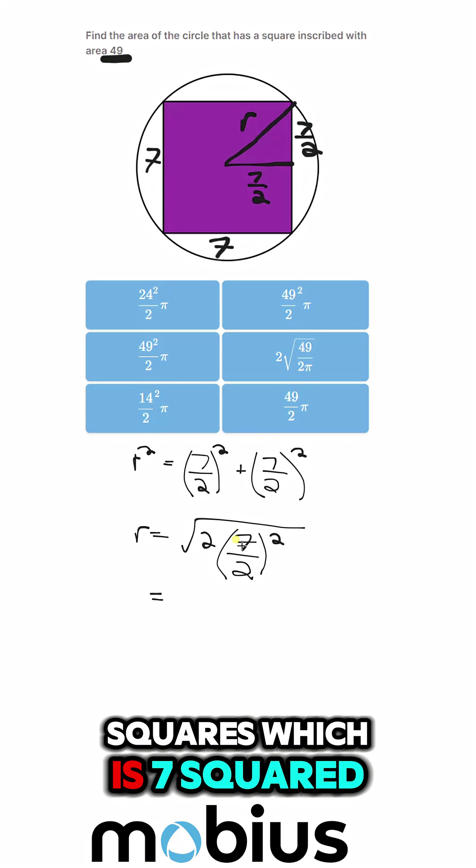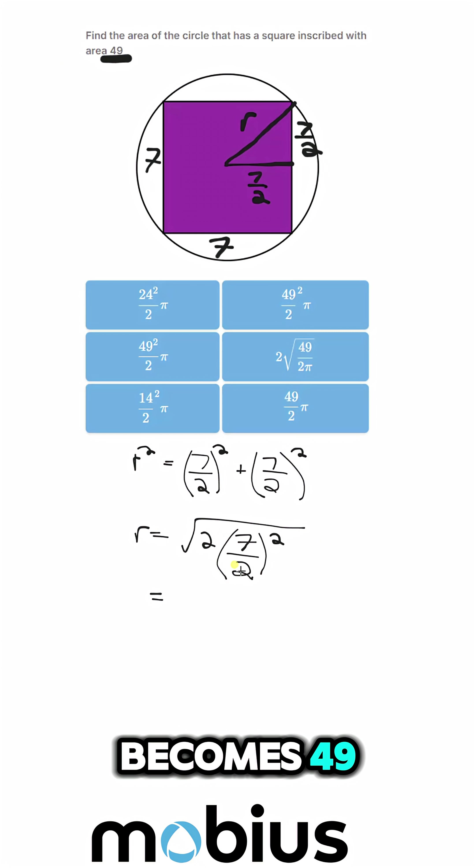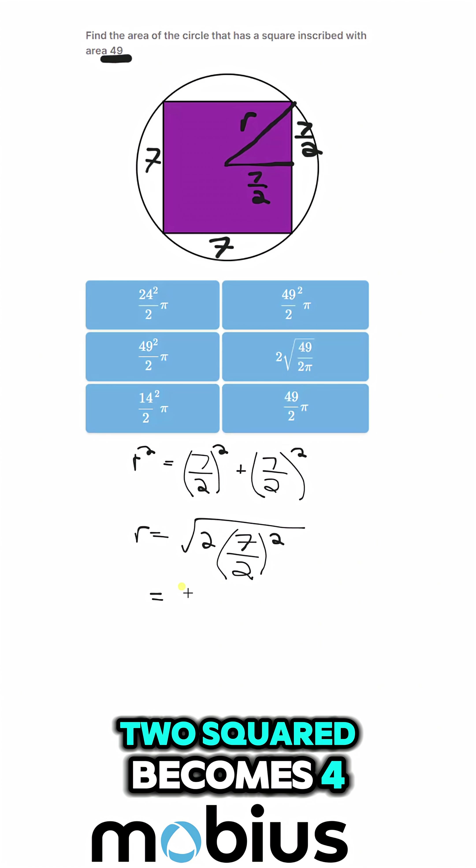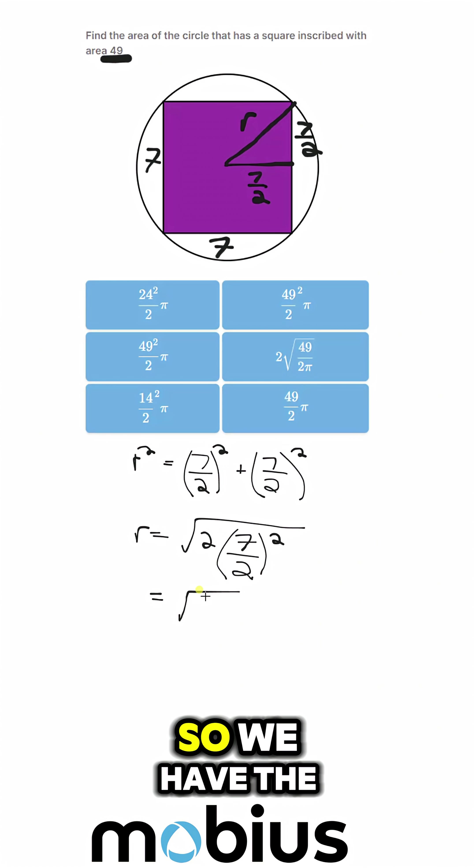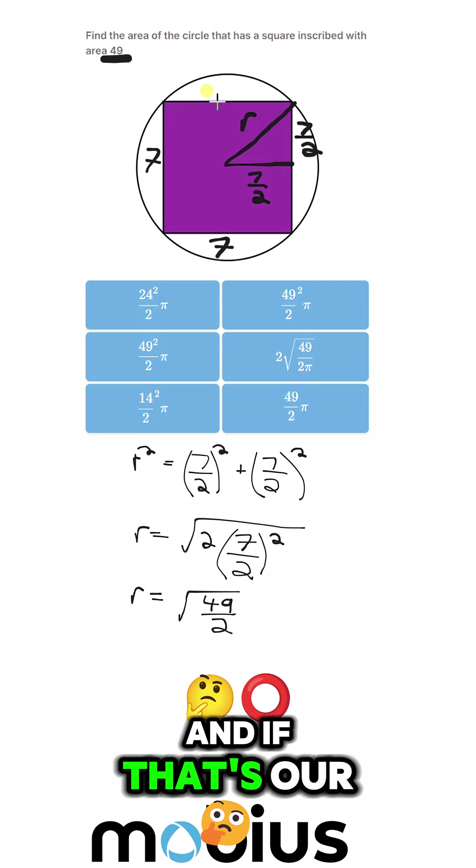Which is, 7 squared becomes 49, 2 squared becomes 4, cancels out with half of that. So we have the root of 49 over 2 as our radius.